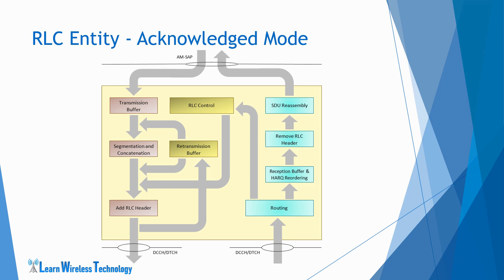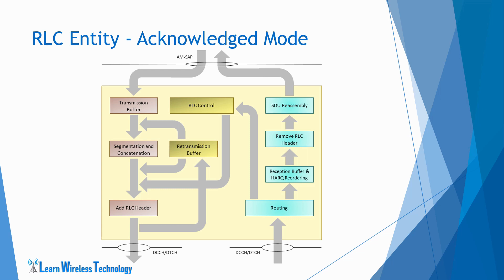The AMD PDUs or AMD PDU segments are appended with relevant headers before being transferred to the lower layer. At the receiving side of the acknowledged mode RLC entity, it detects any duplicate PDUs received, which upon detection are discarded. It then reorders the PDUs if received out of sequence, and after reordering, it detects any loss of RLC data PDUs at lower layers so that it can request retransmission from its peer entity. The header is then removed and SDUs are reassembled and delivered to the upper layers. A status PDU indicating ACK or NAK is sent by the receiving entity to acknowledge the PDUs received and to indicate missing PDUs or PDU segments.